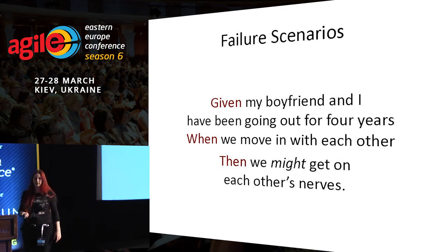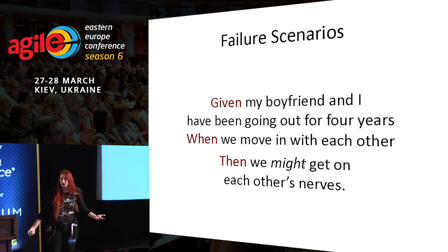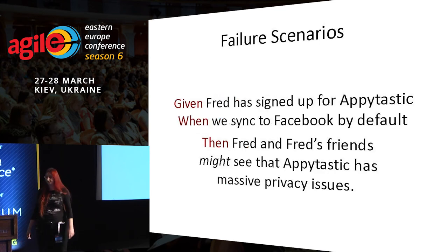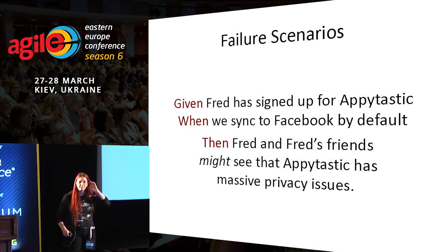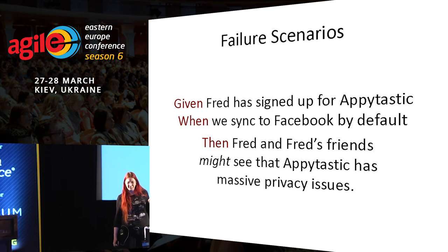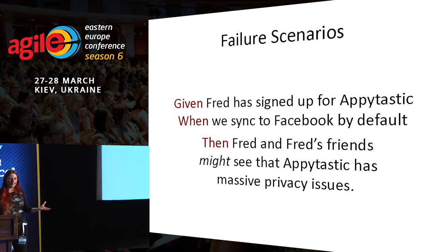Let's have a look at failure scenarios — we need to understand what failure looks like as well. What might happen when my boyfriend and I move in? We might get on each other's nerves and realise it really isn't working. Now for Appytastic: what happens when you notify Facebook of things by default? You accidentally upload something you meant to keep private. Now all your friends can see you're secretly a stamp collector or whatever it is you're trying to hide. Fred and Fred's friends might see that Appytastic has privacy issues and say that's really bad.